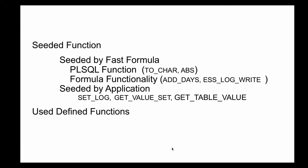The function is basically divided into two parts. One is a seeded function which is given by Fast Formula, and then there are user-defined functions. The user-defined function is used a lot in EBS because the customer has access to the database. Since in Fusion, the cloud does not provide access to the database, you cannot create a user-defined function.